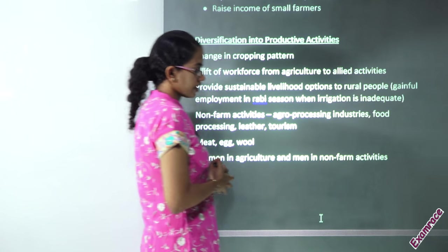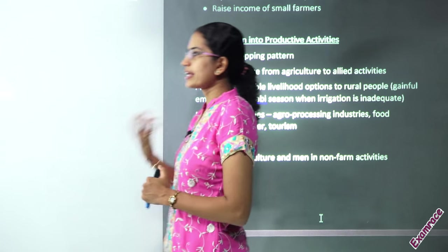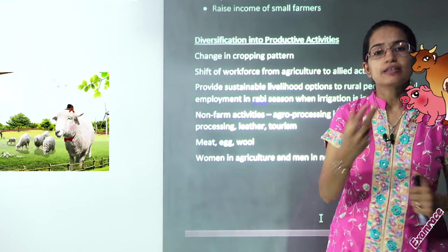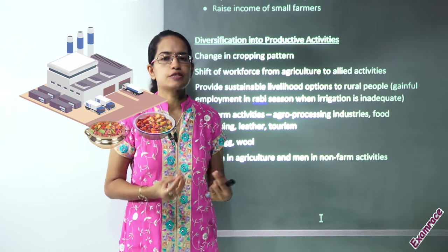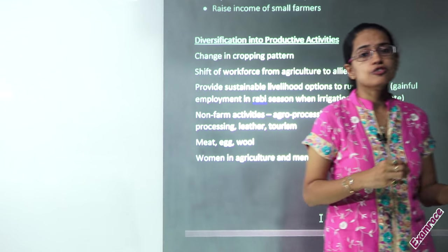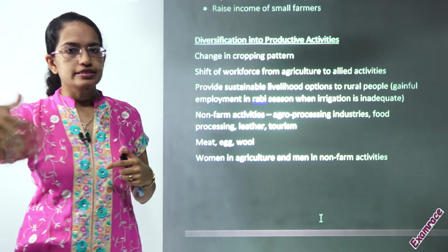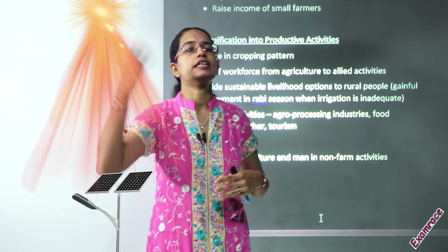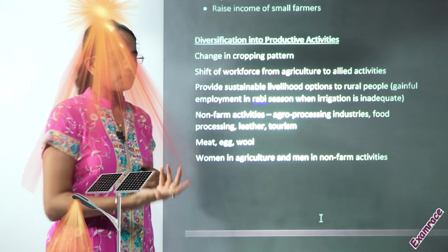Bringing in diversification is again very, very important. If the farmer is earning only through agricultural produce he might not earn enough, but if he has allied activities like animal husbandry, livestock rearing, or making pickles out of farm produce and processing it, that helps. We have the Kusum scheme — rural households are now asked to generate their own solar energy for use in the field, and the additional energy created under the Kusum scheme can be sold to DISCOMs — a very, very important initiative for diversification of income for farmers.